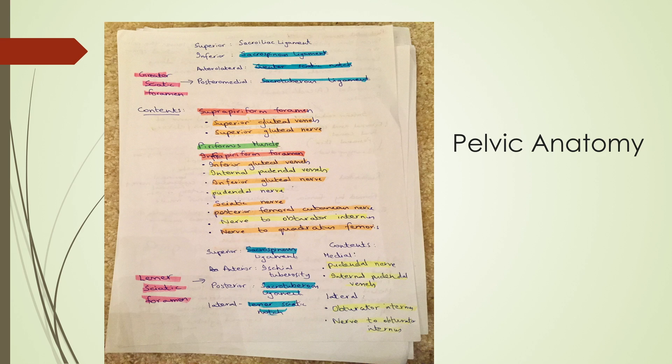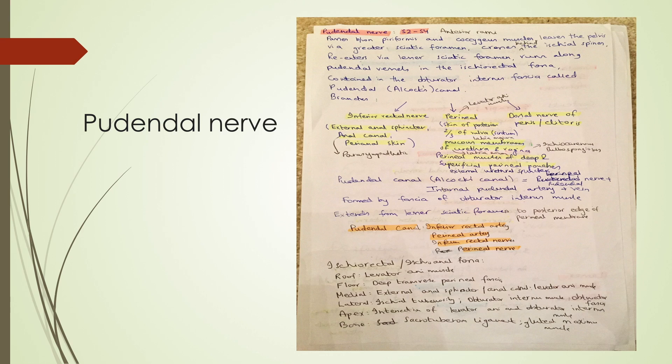On this slide, for example, I've got the greater sciatic foramen and the lesser sciatic foramen. So you need to know what passes through these foramen and what are the boundaries. So in this particular slide, that's what I've covered. I've made sure that everything that's sort of nerves and vessel related, I'm highlighting a different color to the boundaries of it.